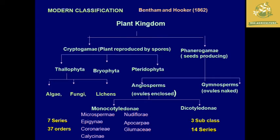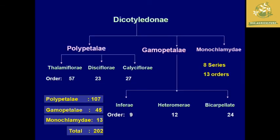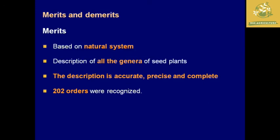Bentham and Hooker classified the plant kingdom into two major groups: Cryptogamae (plants reproducing by spores) and Phanerogamae (the seed-producing group). Under Phanerogamae, they composed monocotyledons and dicotyledons as major classifications. In dicotyledons, they used to have Polypetalae of 107 orders, Gamopetalae of 45 orders, and Monochlamydeae of 13 groups — a total of 202 orders present in dicotyledons.